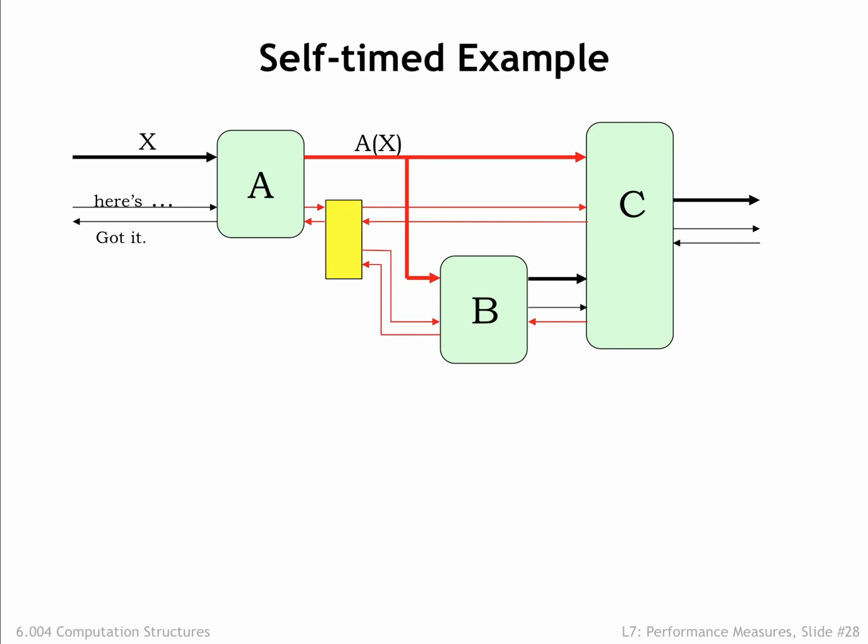Meanwhile B completes its part of the handshake, and C completes its transaction with B, and A deasserts here's X to indicate that it has seen the got X input. When the B and C stages see their here's X signals go low, they finish their handshakes by deasserting their got X outputs, and when they're both low, the yellow box lets A know the handshake is complete by deasserting A's got X input.